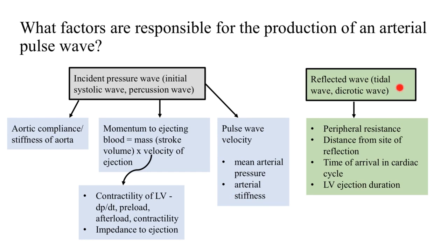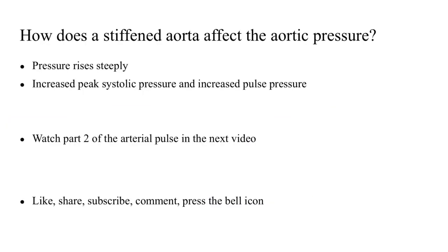What factors affect the reflected waveforms that return from the periphery back to the heart? Number one is peripheral resistance. Second is the distance of the site of reflection from the heart. Third is the time of arrival in the cardiac cycle — if it arrives in systole it gives rise to a tidal wave; if it arrives in diastole it gives rise to a dicrotic wave. Fourth is the duration of left ventricular ejection. Regarding how a stiffened aorta affects aortic pressure: the pressure rises steeply because the aorta is no longer compliant or elastic and is no longer able to relax to accommodate all the stroke volume during systole, leading to an increased peak systolic pressure and an increased pulse pressure.